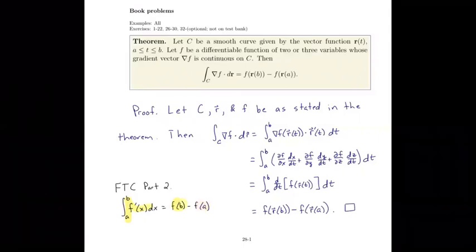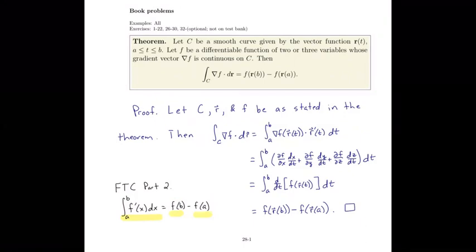This is a really impressive result. We take it for granted all the time in calculus, but it really tells us that everything that happens in this definite integral is just based on the evaluation of an antiderivative at point b and at point a. It's a very interesting and powerful result we've been using throughout calculus.